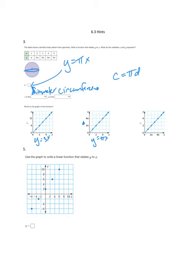Next, number five. Use the graph to write a linear function that relates y to x. This should look really familiar since we've done so much with linear equations. We have a y-intercept of 2, we have a slope of 4 over 3, so we have y equals 4 thirds x plus 2.